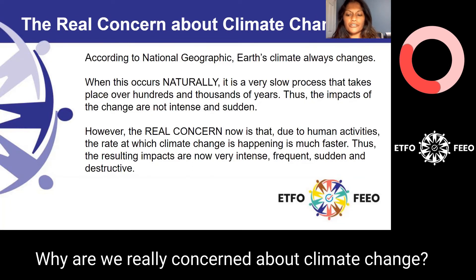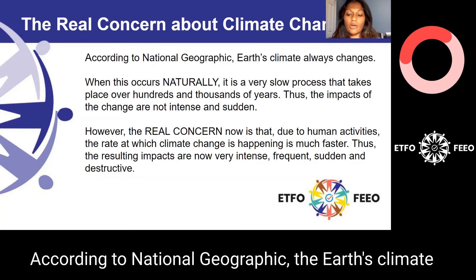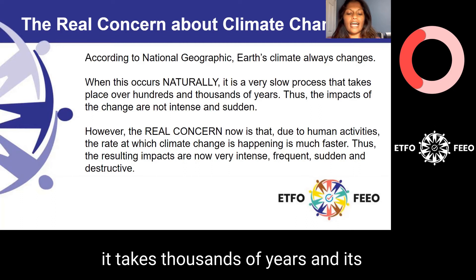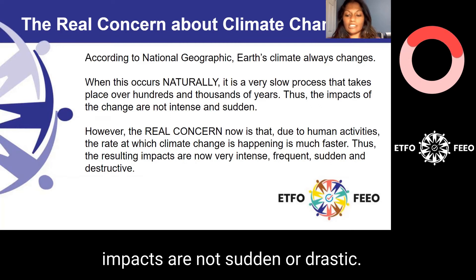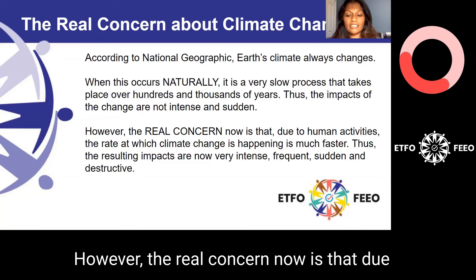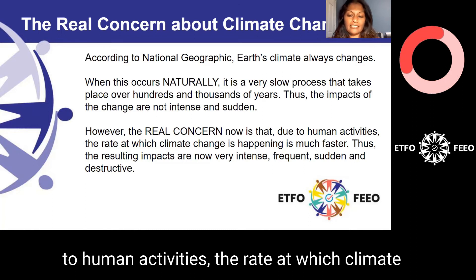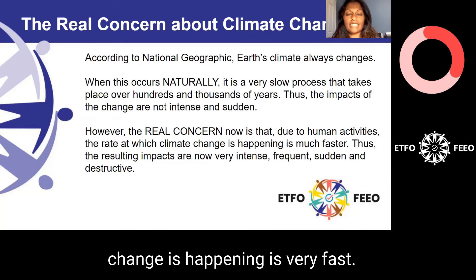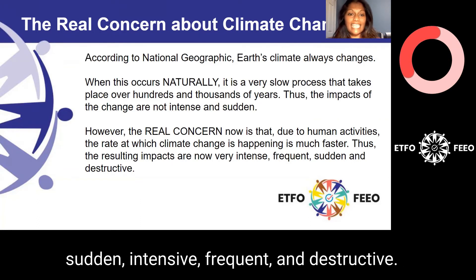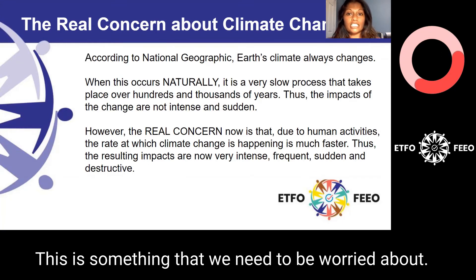Why are we really concerned about climate change? According to National Geographic, the Earth's climate always changes. When this occurs naturally, it takes thousands of years and impacts are not sudden or drastic. However, the real concern now is that due to human activities, the rate at which climate change is happening is very fast. Thus, the resulting impacts are sudden, intensive, frequent, and destructive. This is something that we need to be worried about.